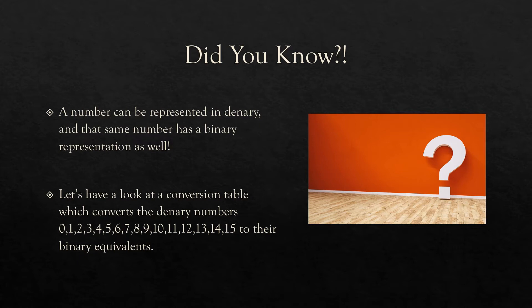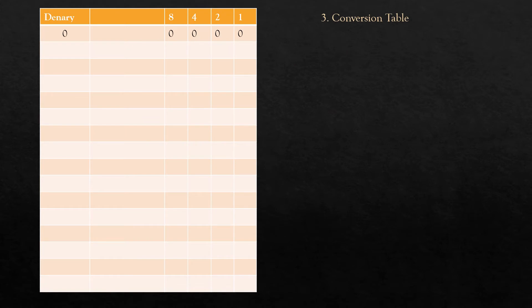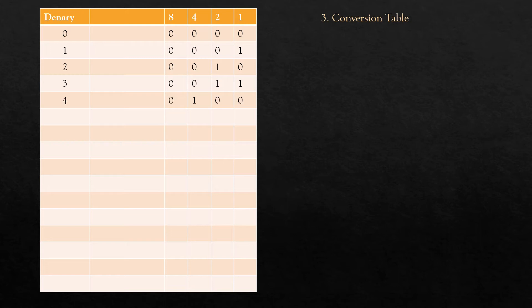Now we're going to look at a conversion table to convert the denary numbers 0 through 15 to their binary equivalents. Representing denary 0 as a nibble — which is 4 bits — it will be simply four 0s. Denary 1 is 0001, denary 2 is 0010, denary 3 is 0011, denary 4 is 0100, 5 is 0101, 6 is 0110, and 7 is 0111.